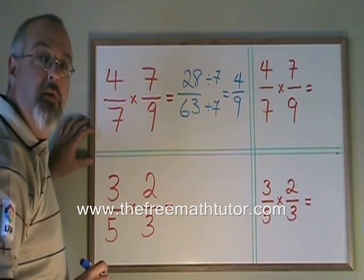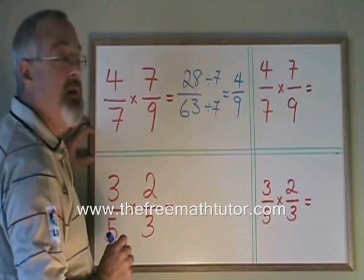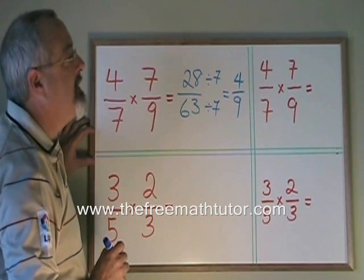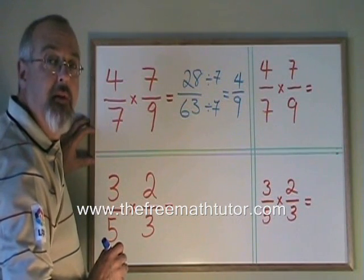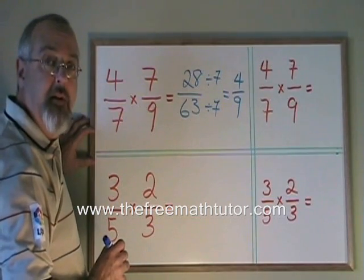Now let's try doing the same question again with canceling. Over here we have the same question and we can see that there is a 7 on the top and a 7 on the bottom. Because both top and bottom have a 7, we can cancel.